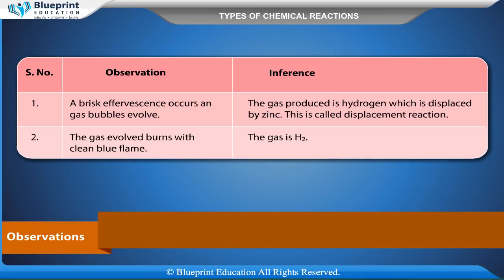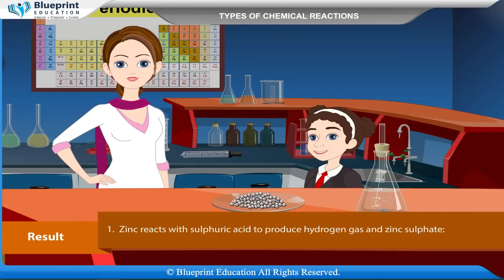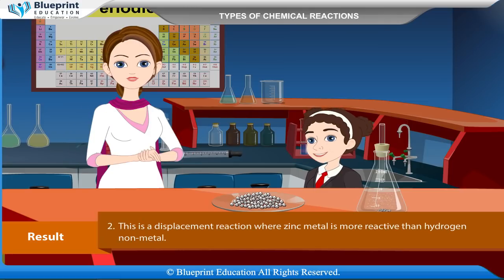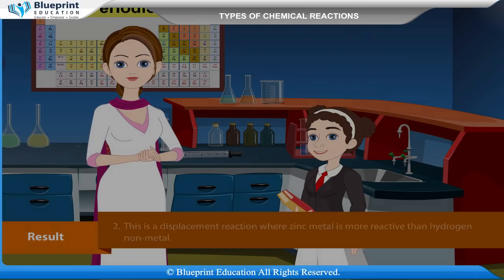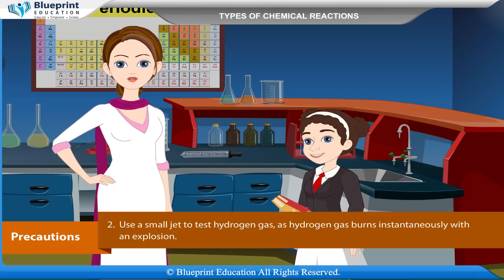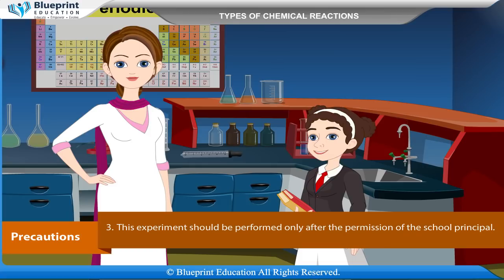Observations: (1) A brisk effervescence occurs and gas bubbles evolve — the gas produced is hydrogen, displaced by zinc (displacement reaction). (2) The gas evolved burns with a clean blue flame — confirming the gas is hydrogen. Result: Zinc reacts with sulphuric acid to produce hydrogen gas and zinc sulphate: Zn + H₂SO₄ → ZnSO₄ + H₂. This is a displacement reaction where zinc metal is more reactive than hydrogen. Precautions: Handle chemicals with care; use a small jet to test hydrogen gas, as it burns instantaneously with an explosion. This experiment should only be performed after permission of the school principal.